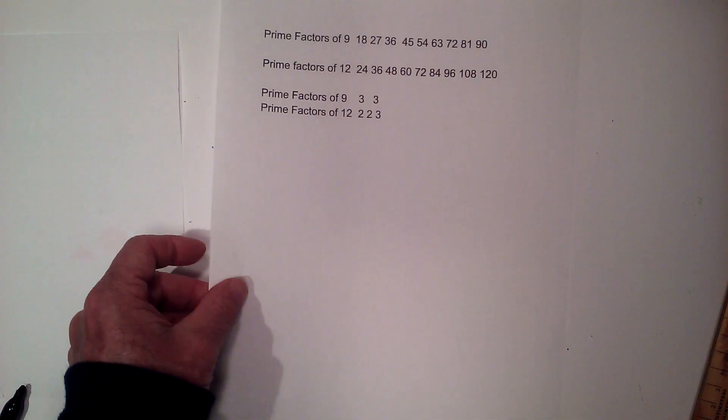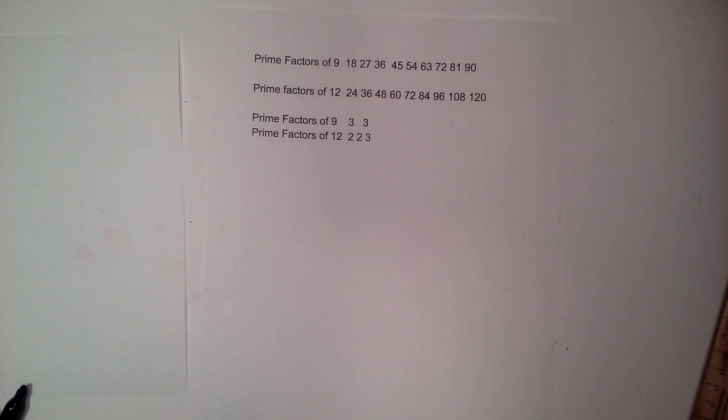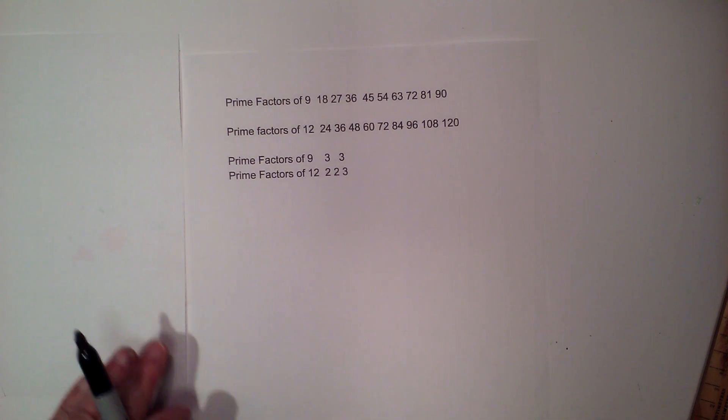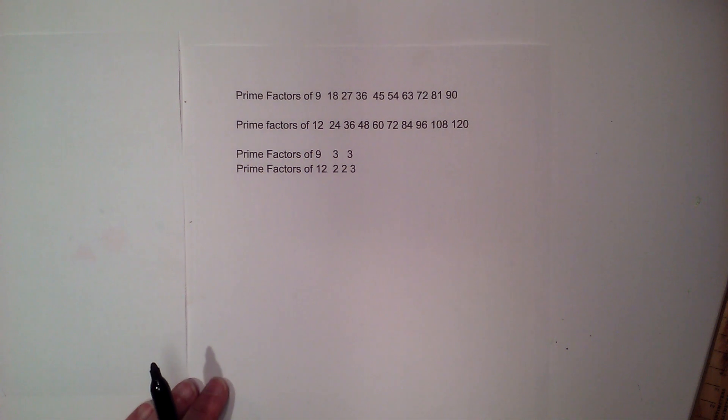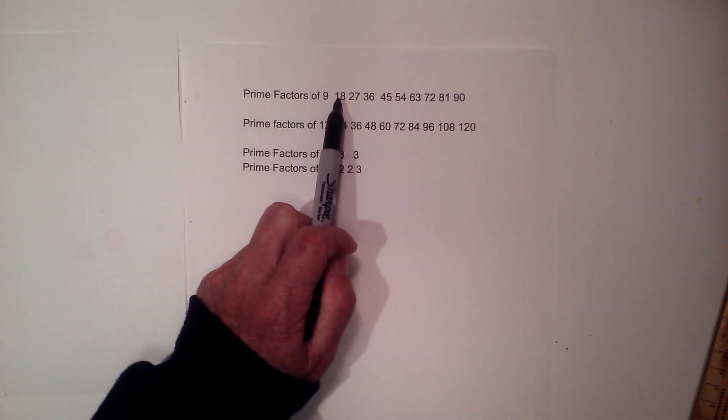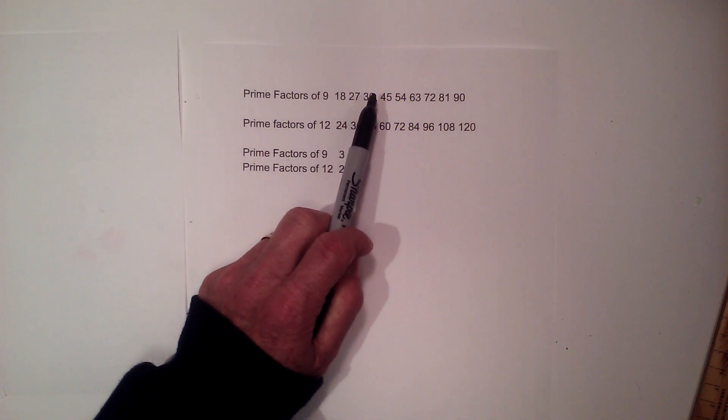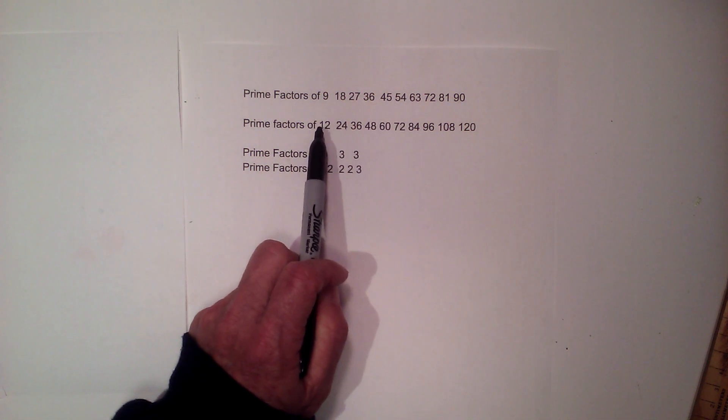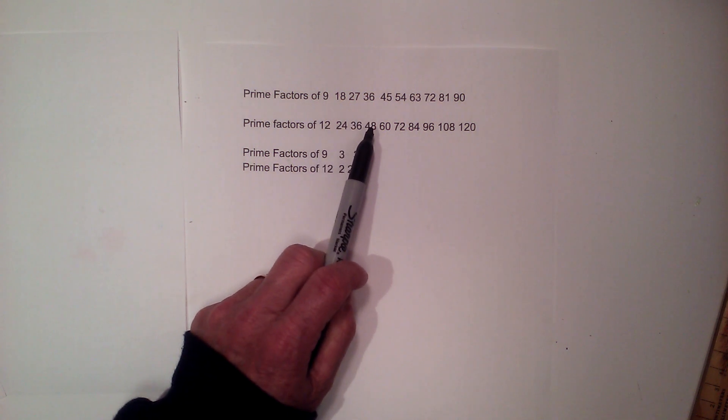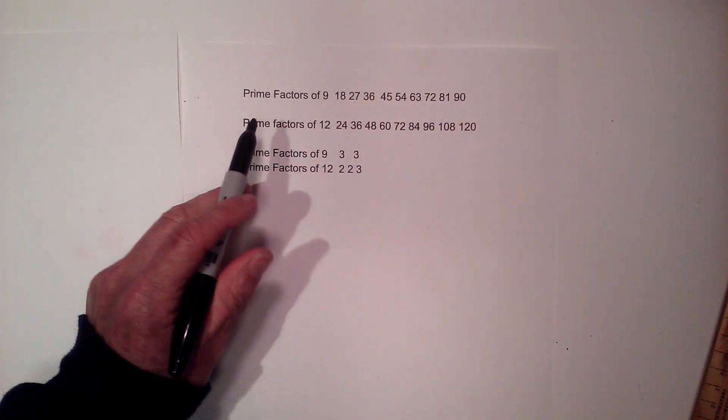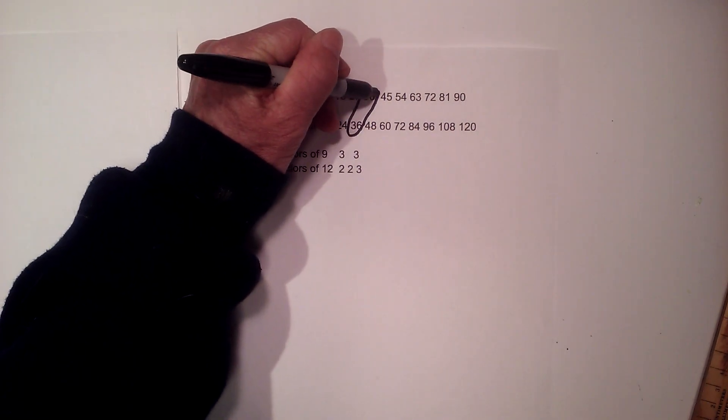So up next, let's try to find the prime factors of nine and twelve. So it is nine times one is nine, eighteen, twenty-seven, thirty-six, forty-five, fifty-four, sixty-three. And then twelve: twelve times two is twenty-four, twelve times three is thirty-six, twelve times four is forty-eight. And then I look for a number found in both of these, and that is thirty-six.